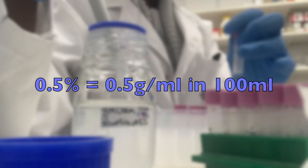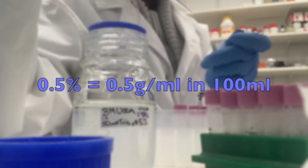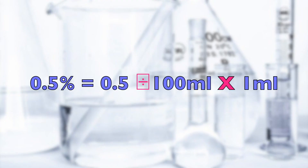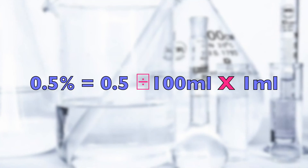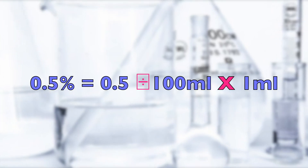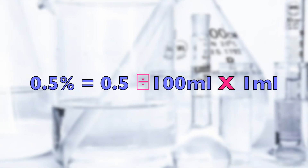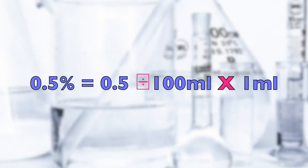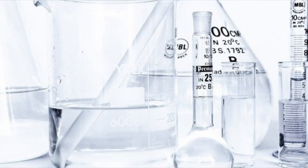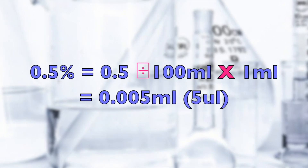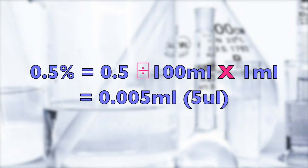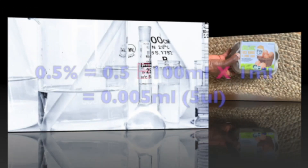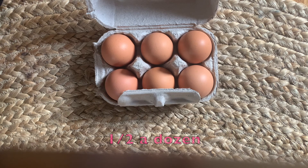The easiest way to go about it: I want 0.5%, which means 0.5 in every 100 milliliters. So I divide 0.5 by 100 — that sets the amount per one milliliter — and then multiply by the volume I want, which is one milliliter. That gives 0.005 milliliters, which equals 5 microliters of the reagent to be dissolved in your solution.